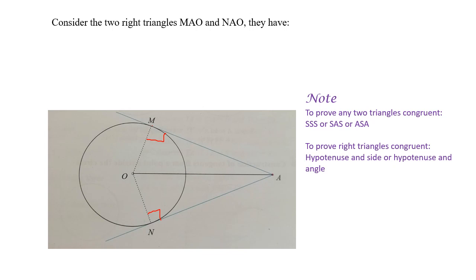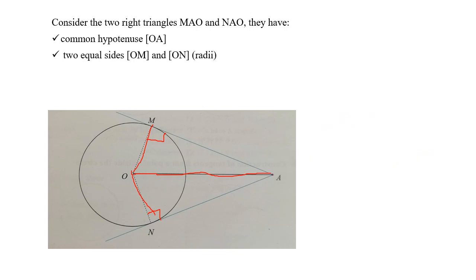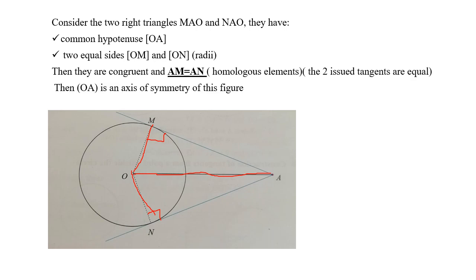Now how can we use this note to prove the two triangles are congruent? First, we notice that the hypotenuse OA is common. We still need an angle or a side. Now I have the angle and the side ready: OM equals ON because it's the radius and the radii are equal. So with the common hypotenuse and two equal sides because they are radii, the two triangles are congruent.